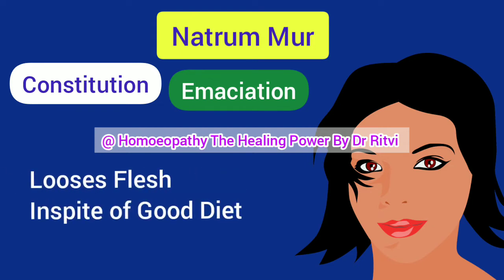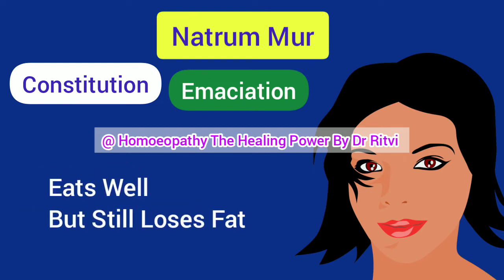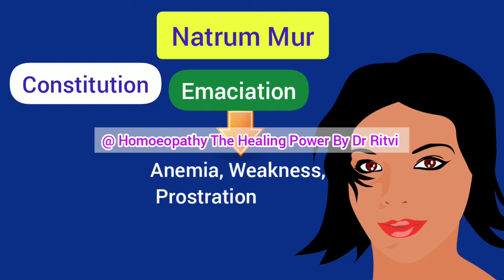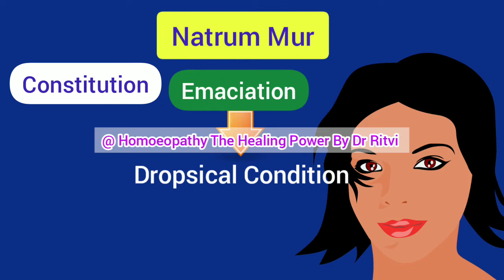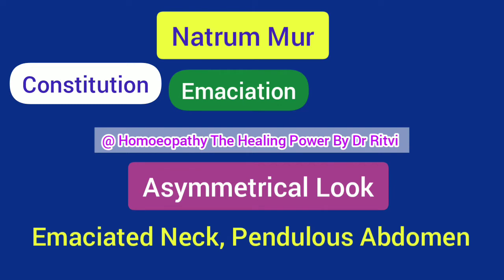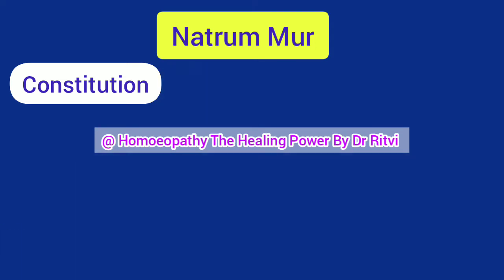The most unique feature of the Natrum Mur constitution is emaciation, especially around the neck region. Natrum Mur is one of the greatest remedies for emaciation. The patient is very thin, loses flesh, and emaciation progresses despite taking good care and a nutritious diet. This excessive emaciation eventually produces anemia, weakness, and prostration. The patient may become powerless and bedridden, and sometimes a dropsical condition develops, giving an unproportionate, unsymmetrical look, with great emaciation around the neck and a pendulous abdomen.